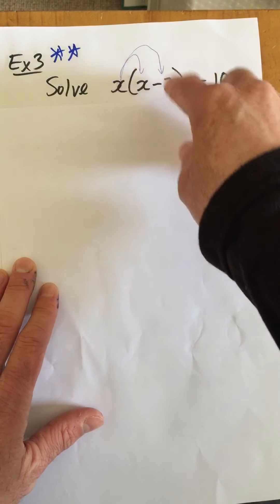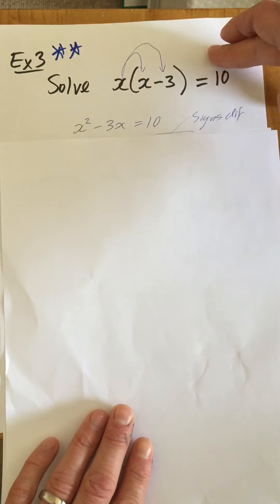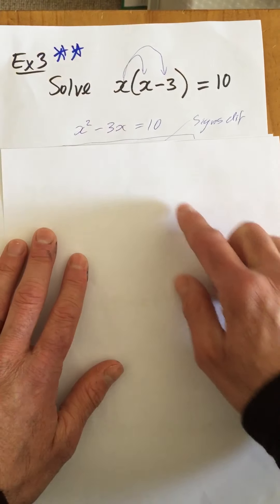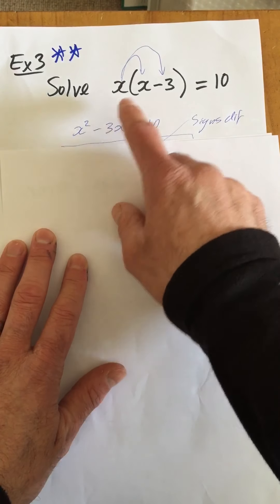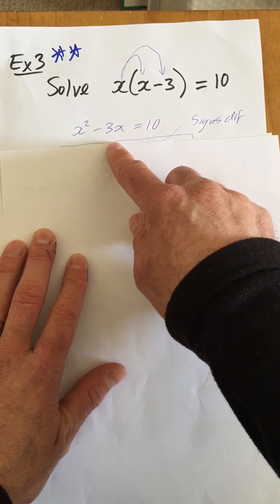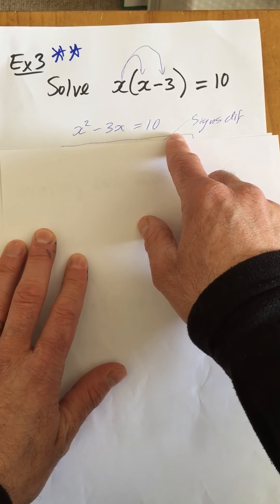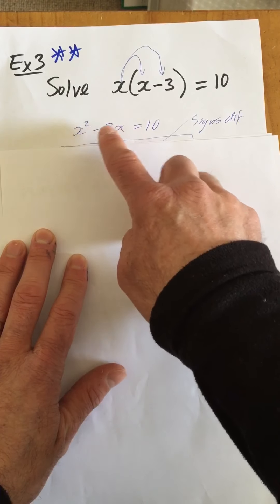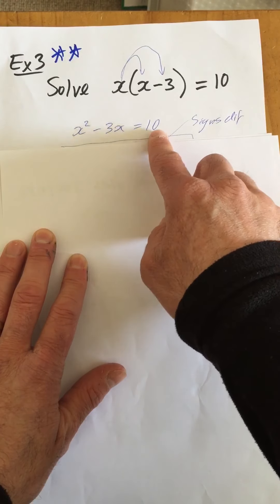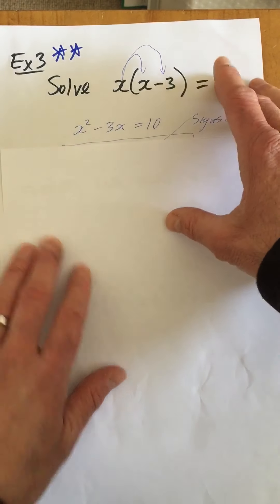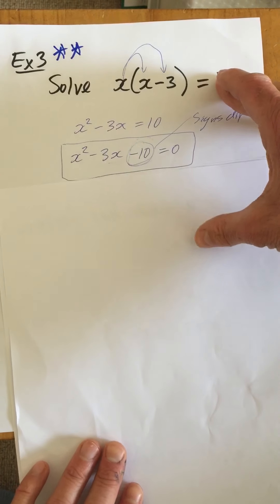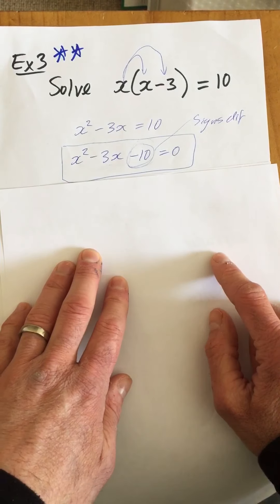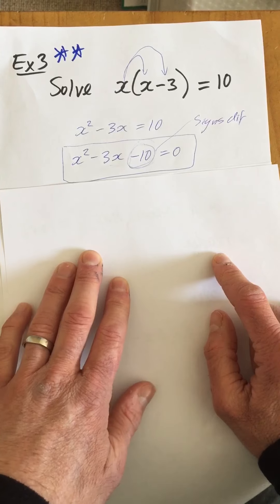So we're going to multiply x by x and x by minus 3. Now when you do that, you get x by x is x² and x by -3 is -3x equals 10. Now we have a quadratic. See the x² and the equals? But we have to make it equal zero. So how we make it equal to zero is we bring the 10 over to the left and you get this equation here: x²-3x-10=0.